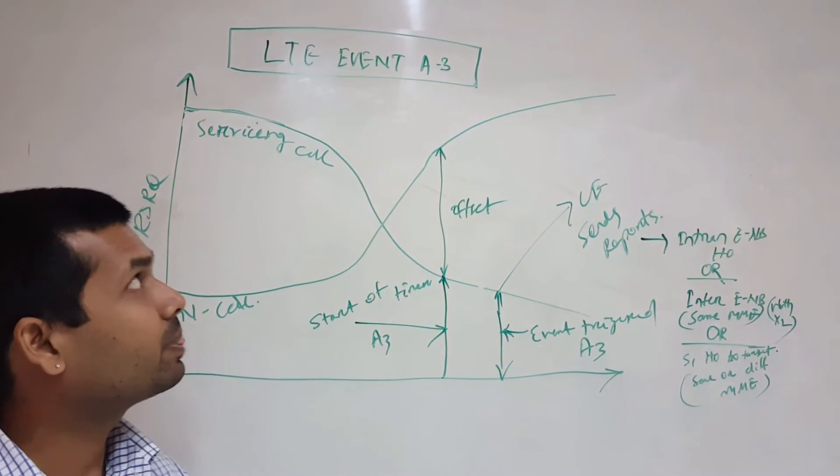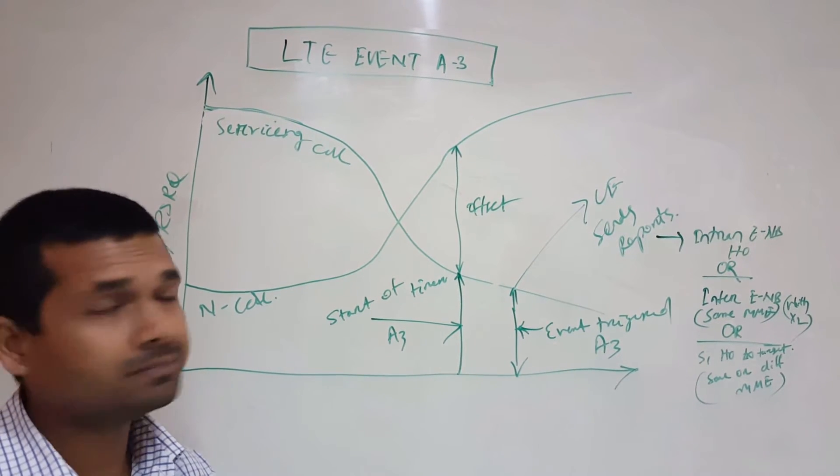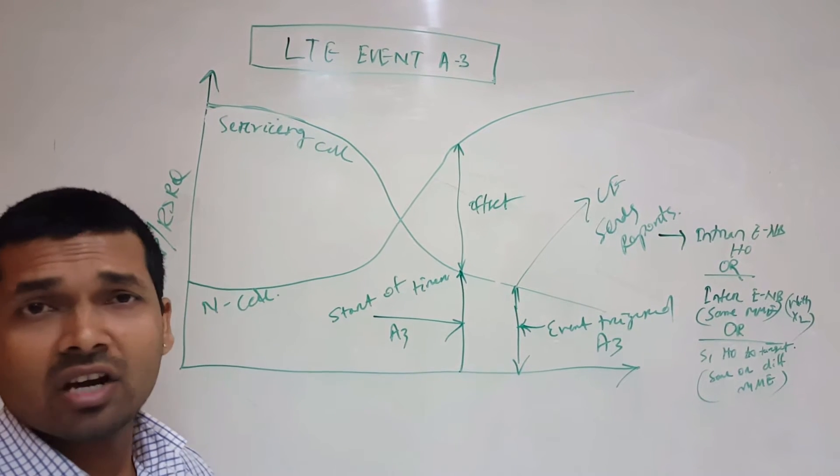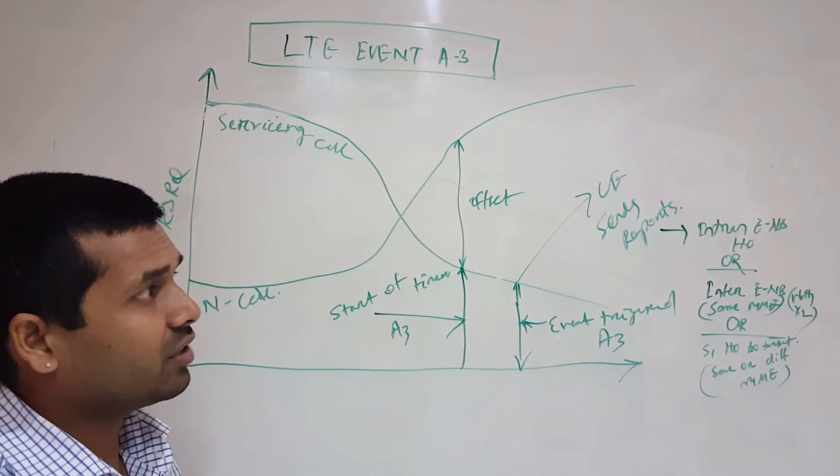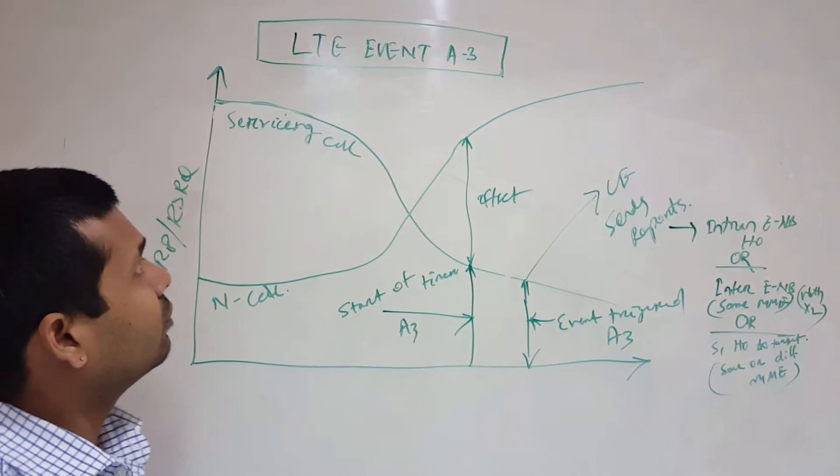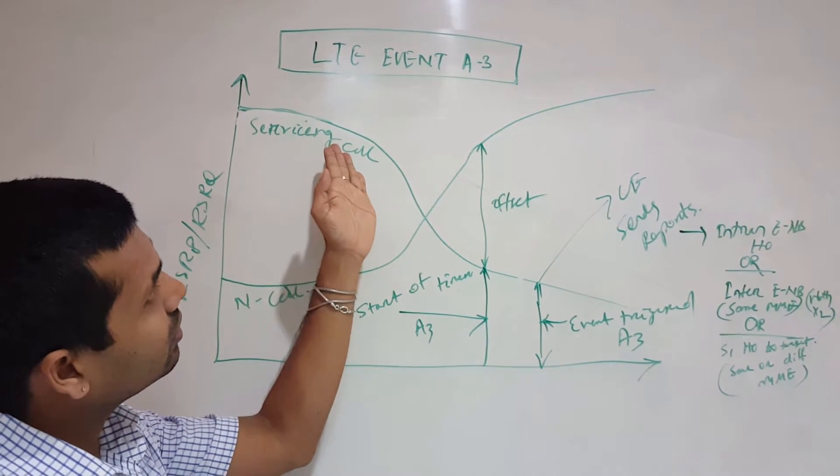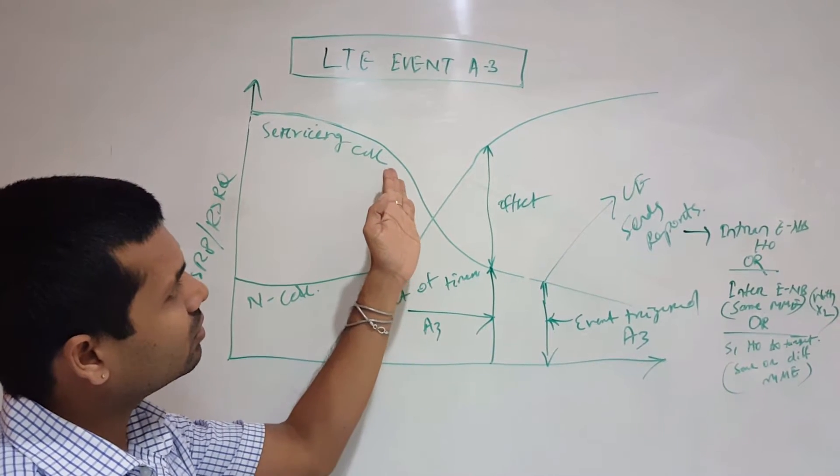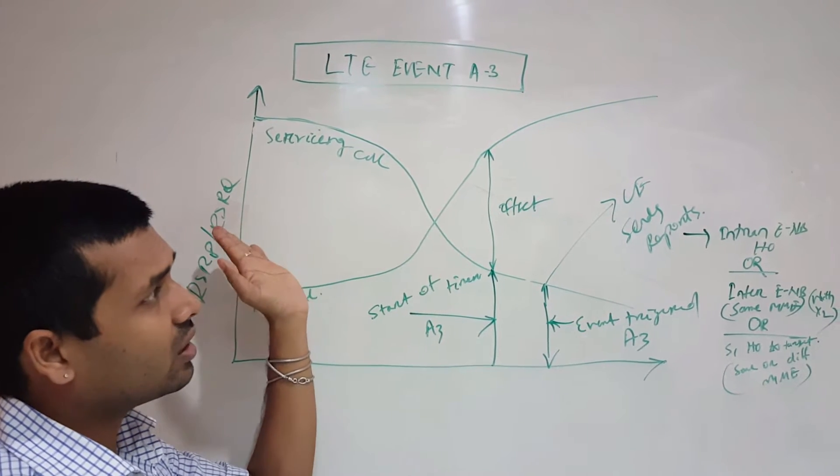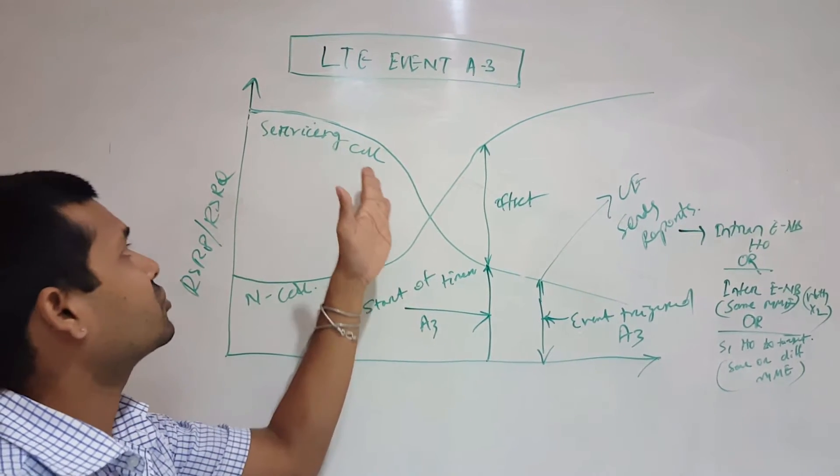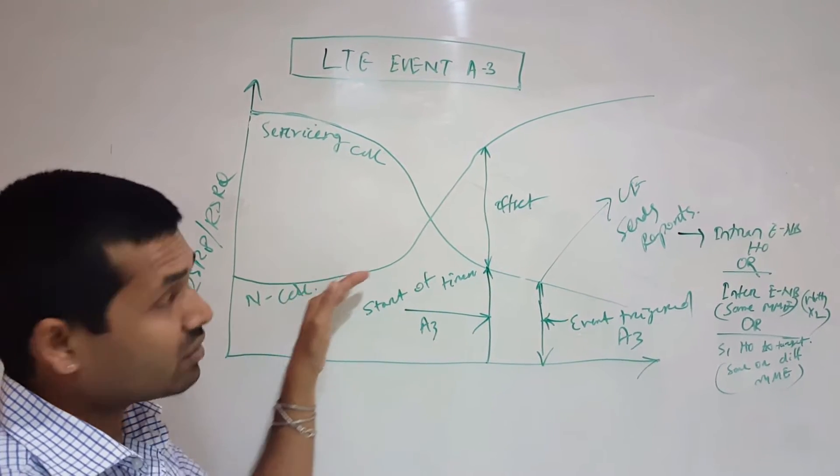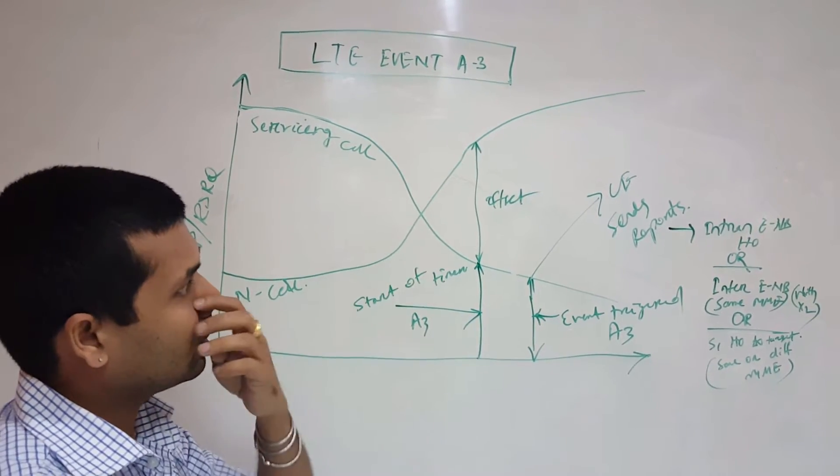Hello everyone, we'll be discussing A3 event today. A3 is the intra-frequency handover event. When our serving cell is experiencing bad coverage or we have bad RSRP or RSRQ conditions and our neighbor cells are becoming better, this triggers the process.